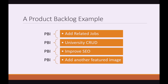Here's an example of a Product Backlog. You can see we have various PBIs with some descriptions: Ad-Related Jobs, University Crud, Improve SEO, Add Another Featured Image. You can see they're not really detailed enough — maybe University Crud sounds okay, but Improve SEO definitely isn't.